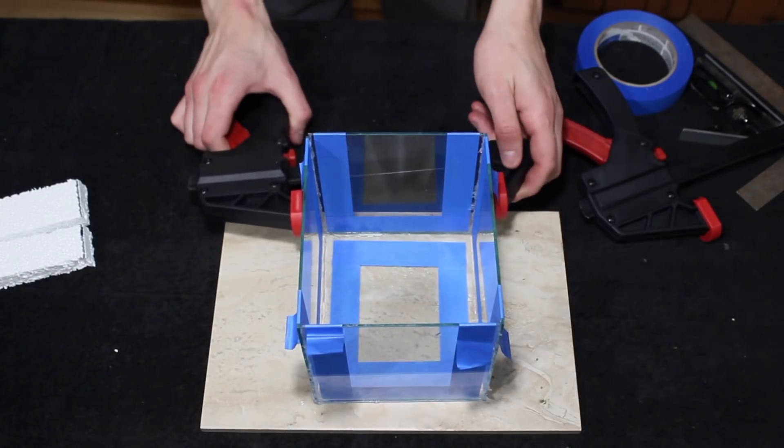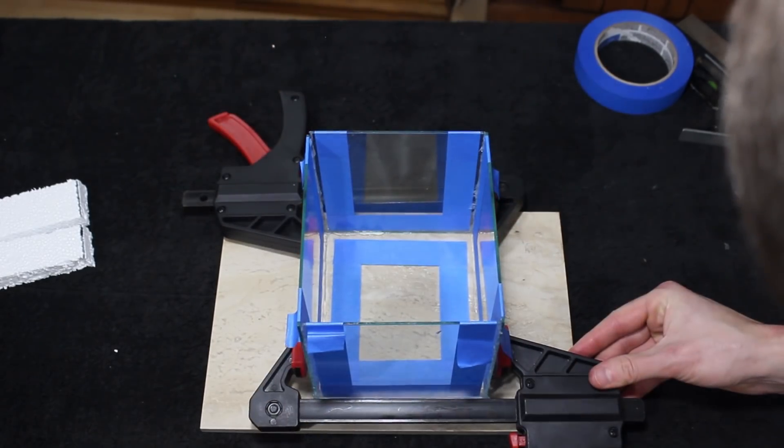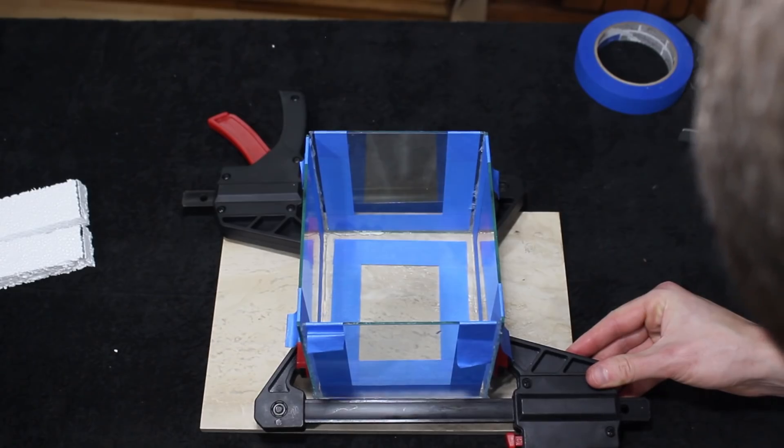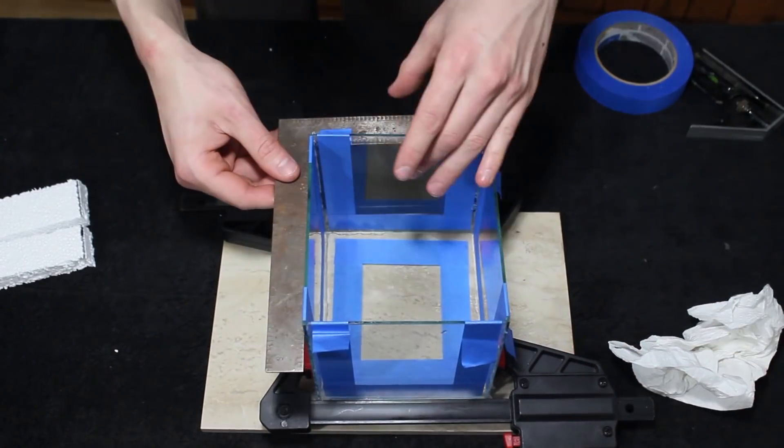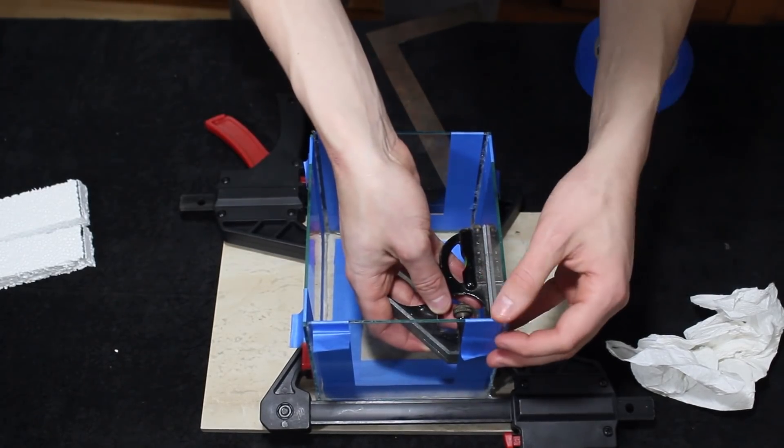A bar clamp was then lightly attached to either end of the aquarium. I'm simply using these to help hold the aquarium together while the silicone cures and while I'm working on it. As such, I went around and made sure the aquarium was nice and square, adjusting when necessary.